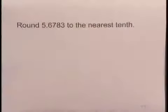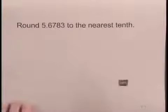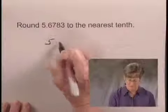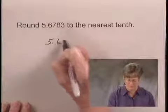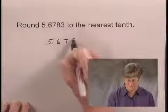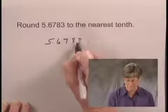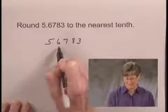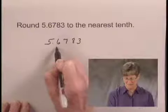We'll round a number written in decimal notation. We'll round 5.6783 to the nearest tenth. We have 5.6783. The digit 6 is in the tenths place.